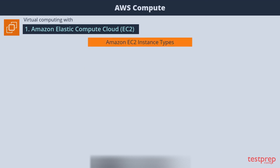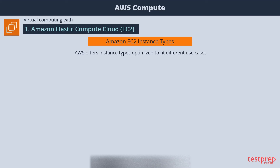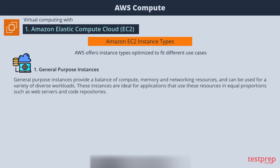Next are Amazon EC2 instance types. It is important to know your use case well before launching an instance, as AWS offers instance types optimized to fit different use cases. First, general purpose instances provide a balance of compute, memory, and networking resources and can be used for a variety of workloads. These are ideal for applications that use resources in equal proportions, such as web servers and code repositories.